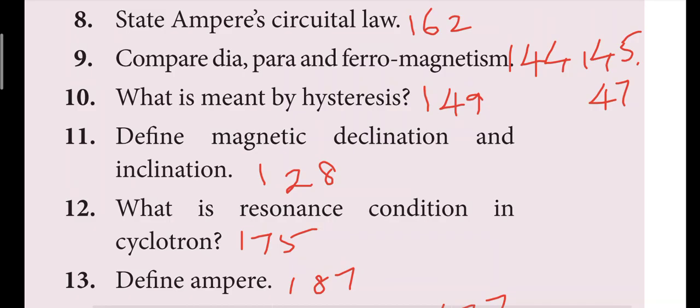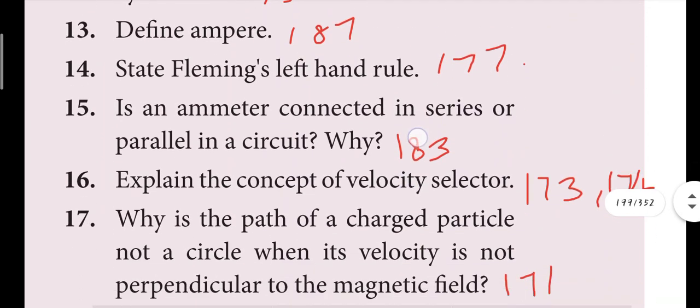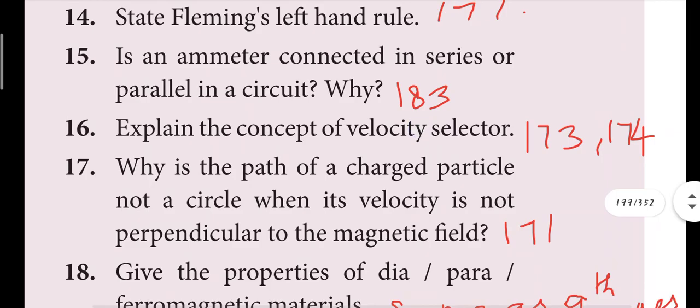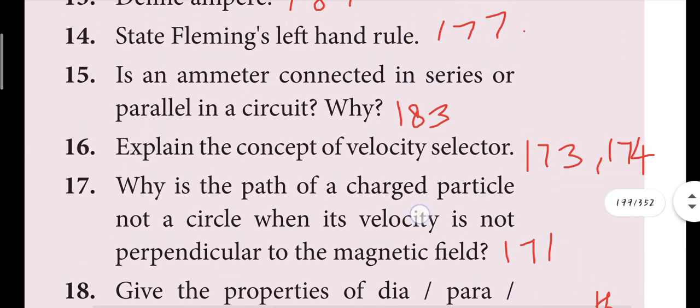Ninth question: compare dia, para, and ferromagnetism — pages 144, 145, and 147. Tenth question: what is meant by hysteresis — 149. Eleventh question: magnetic declination and magnetic inclination — 128.